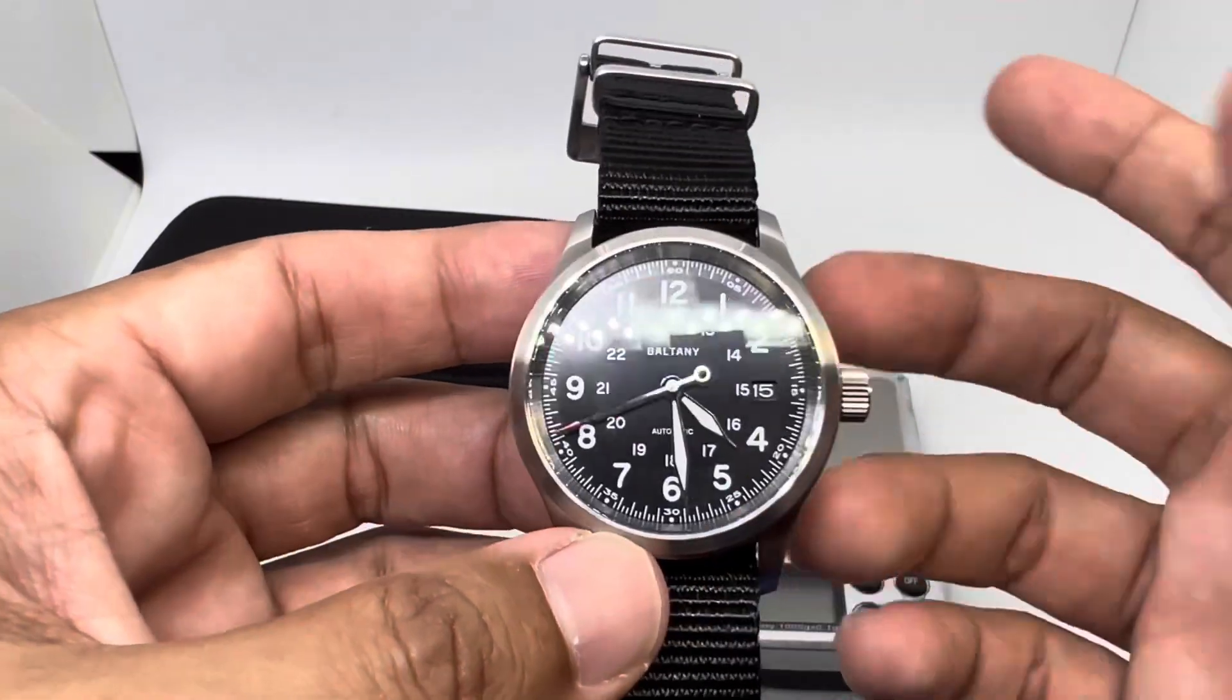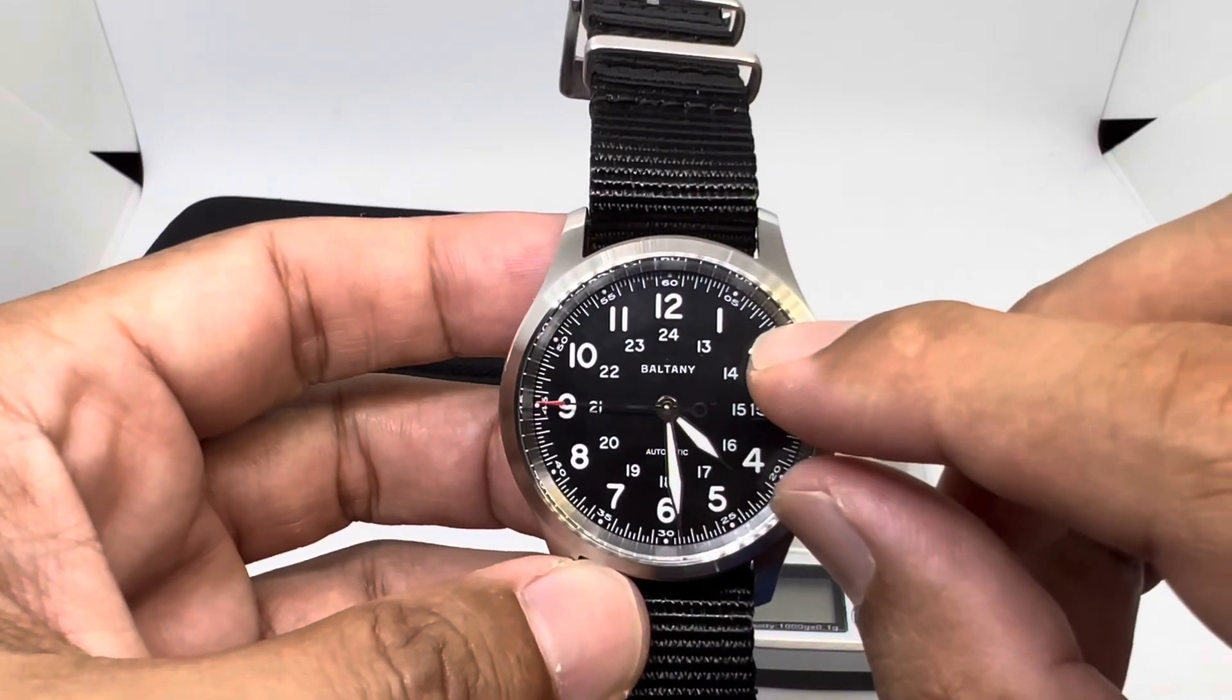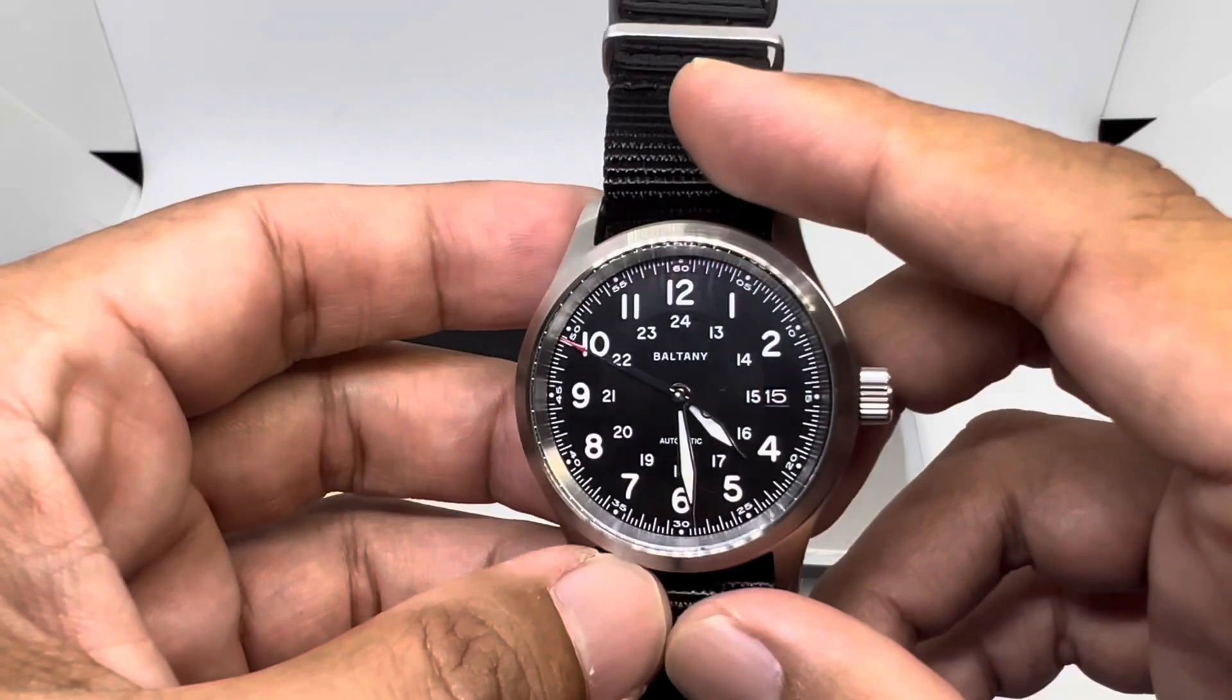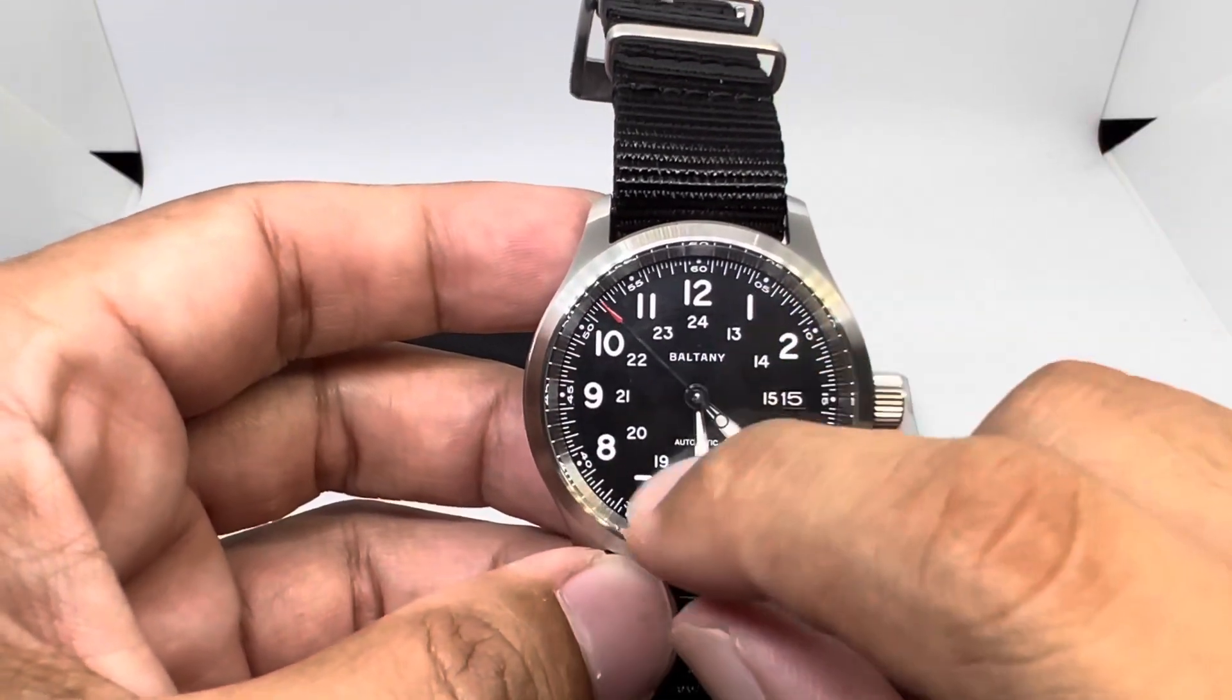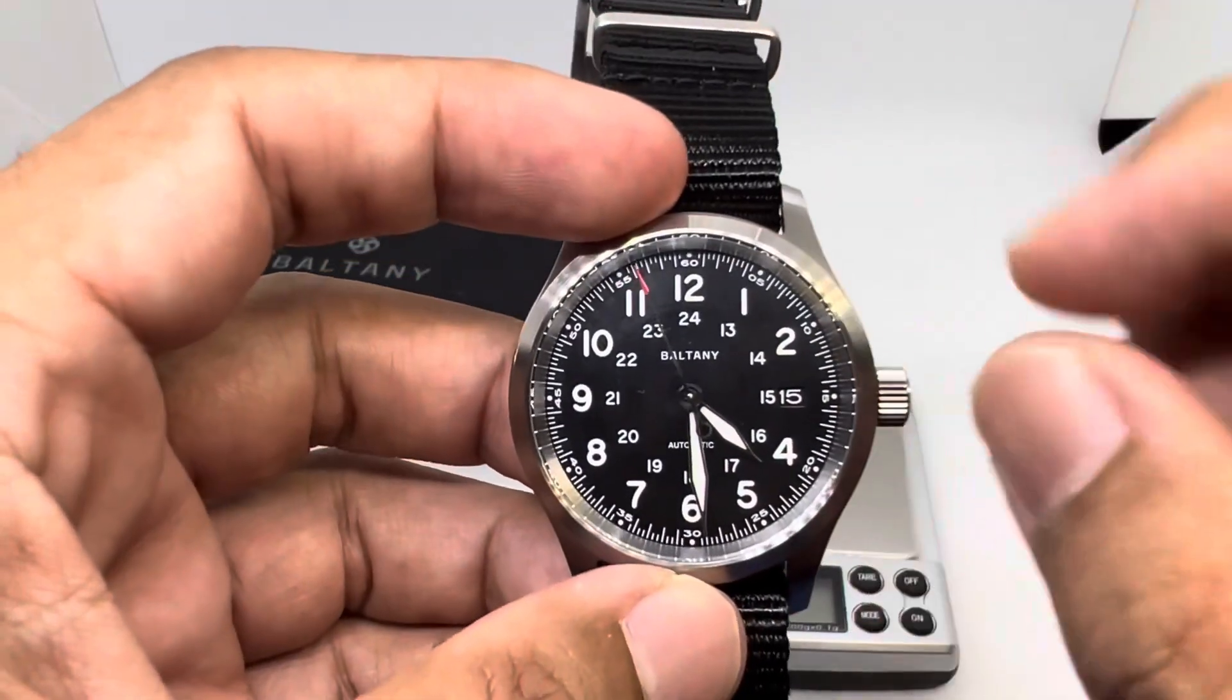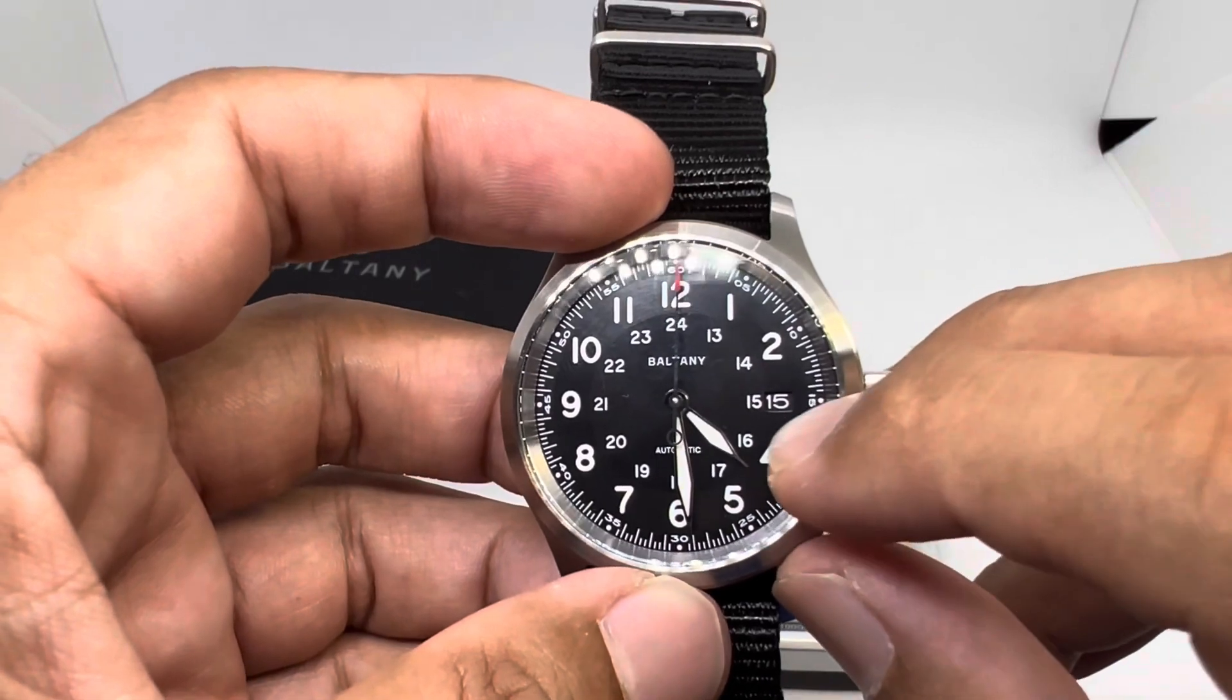Hour markers are all printed in white BGW9 SuperLuminova, and of course the hour markings on the inner circles are also printed in BGW9. Another thing that is different compared to the OG is check out that black date wheel.